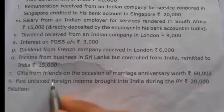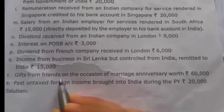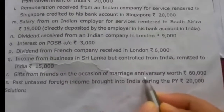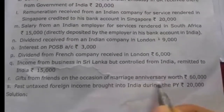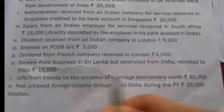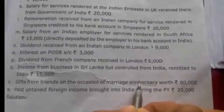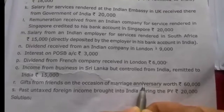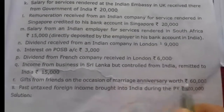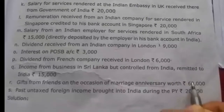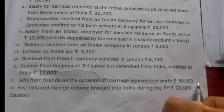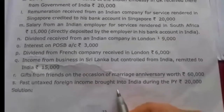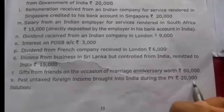Eighteenth, gift from friends on the occasion of a marriage anniversary worth Rs. 60,000. Note: gifts on a marriage function are exempt, but gifts on a marriage anniversary are taxable. The exemption limit is Rs. 50,000; since Rs. 60,000 exceeds that, the entire Rs. 60,000 is taxable for all three cases. Nineteenth, past untaxed foreign income brought into India during the previous year Rs. 20,000 — this does not relate to the current previous year, so it is not taxable.